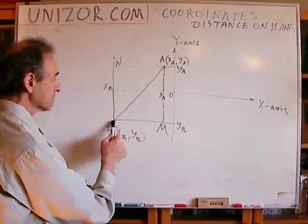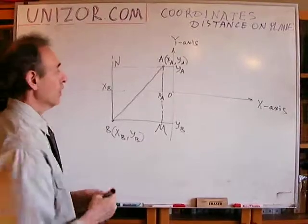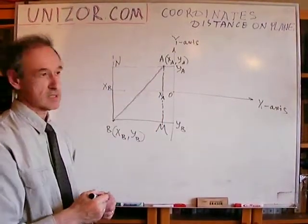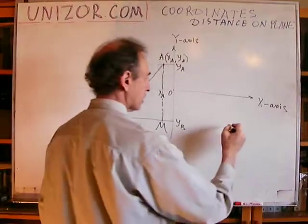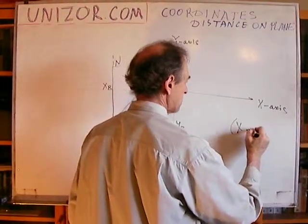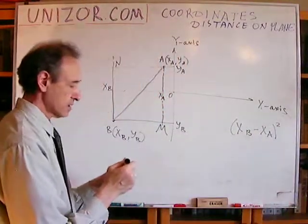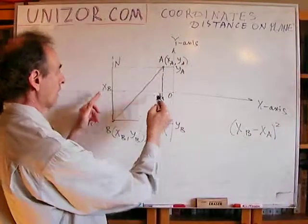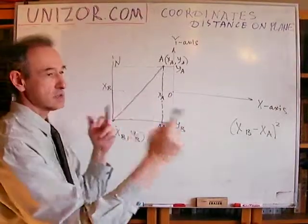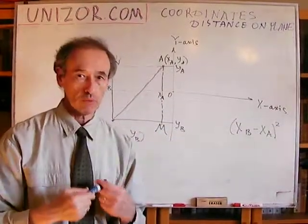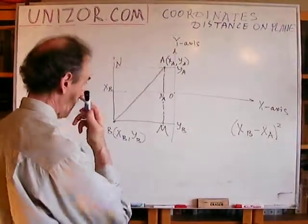So, since Pythagorean theorem deals with the square of each cathetus, so I need the square of the distance between B and M, which is the same as the square of the distance between x_b and x_a. And we know that that particular thing is (x_b - x_a)². That was explained in the previous lecture, where I was talking about the distance between two points on the line where the Cartesian coordinate system is established.